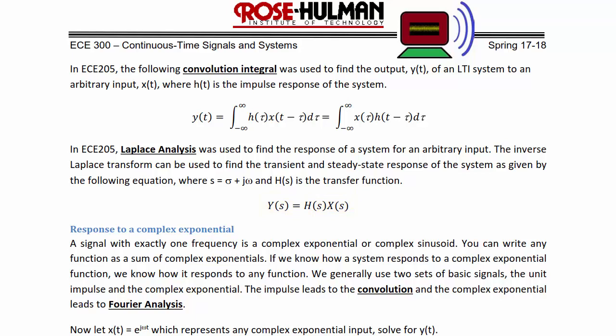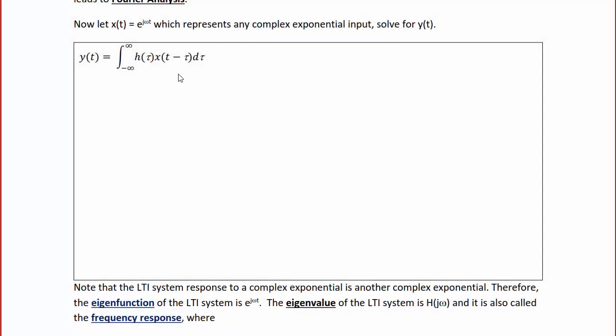After the transient has died off, H(s) evaluated at s = jω gives the sinusoidal steady-state response. A signal with exactly one frequency is a complex exponential or complex sinusoid. You can write any function as a sum of complex exponentials. If we know how our system responds to a complex exponential, we know how it responds to any function. We generally use two sets of basic signals: the unit impulse and the complex exponential. The impulse leads to convolution and the complex exponential leads to Fourier analysis.